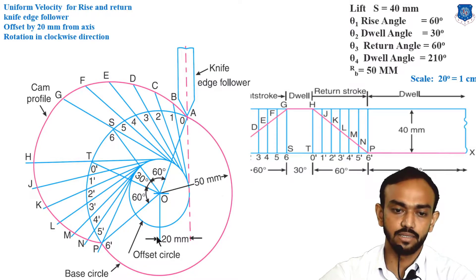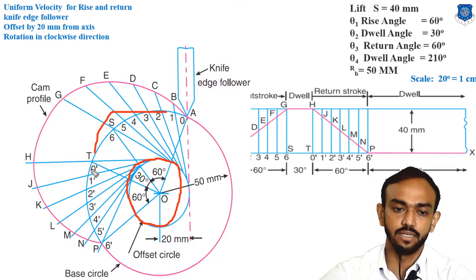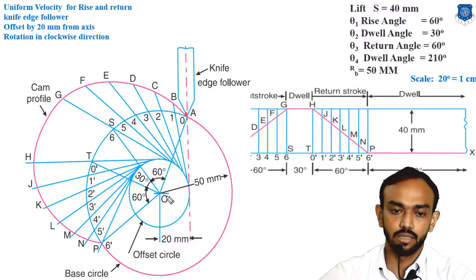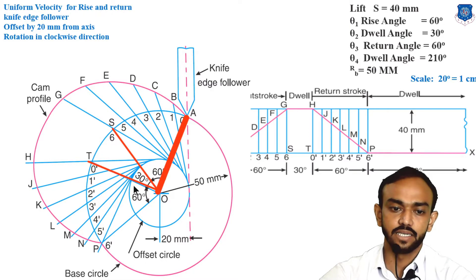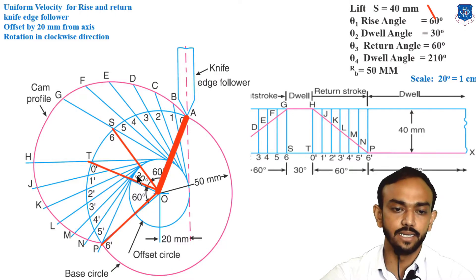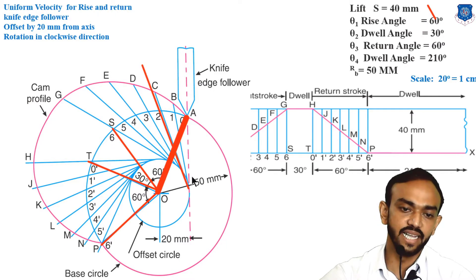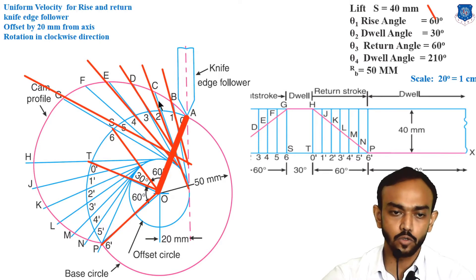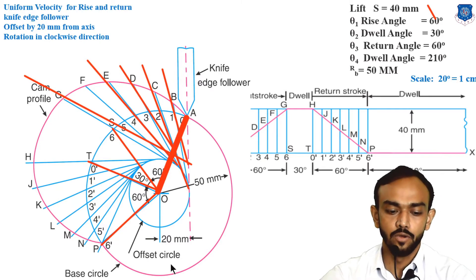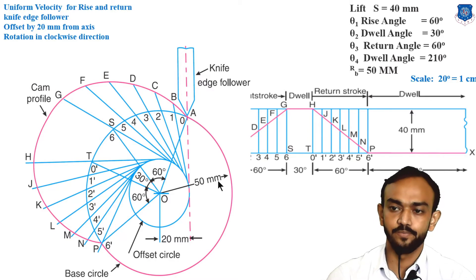Let me revise the procedure. First, make the base circle and then the offset circle inside it with the same center. Draw a horizontal line and then a vertical line, connect to the center — this is your reference line. Make all angle partitions: 30, 60, 60, and 210 as per the given data. All division lines must be tangent to the offset circle and pass through the respective points. This is how you draw the complete cam profile with offset. Thank you.